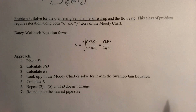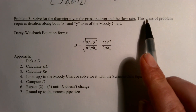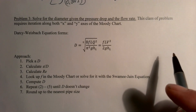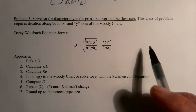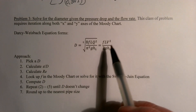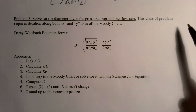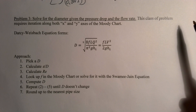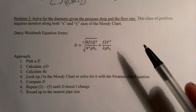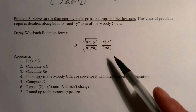You might want to look at those other videos before watching this one, as these problems are more complicated. In the other videos we looked at how to use the Moody chart to compute the friction factor, which depends on the Reynolds number and the relative roughness. When computing pipe diameter it is more difficult because both the relative roughness and the Reynolds number depend on the diameter. We will often have the head loss as one of the given parameters, so we work with the Darcy-Weisbach equation.